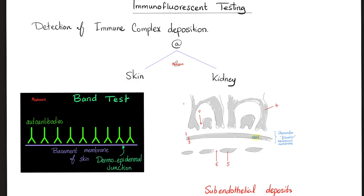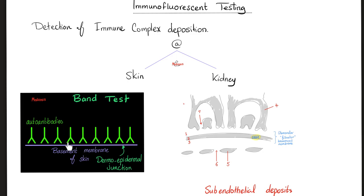How can I see those antibodies? You see them using the immunofluorescence technique — they light up under the microscope. You can find antibodies attacking your skin, your kidney, or any other organ. That was the essence of type 3 hypersensitivity reaction.